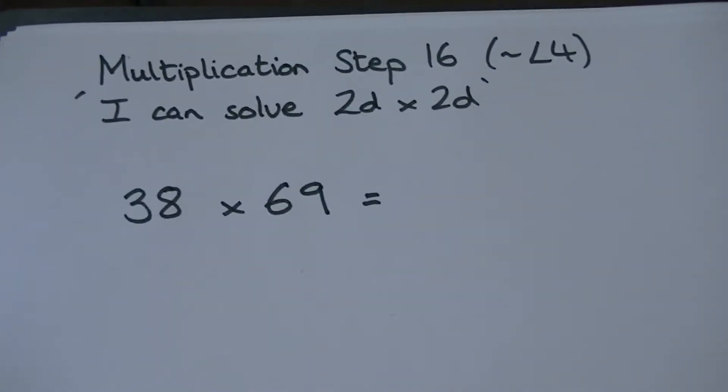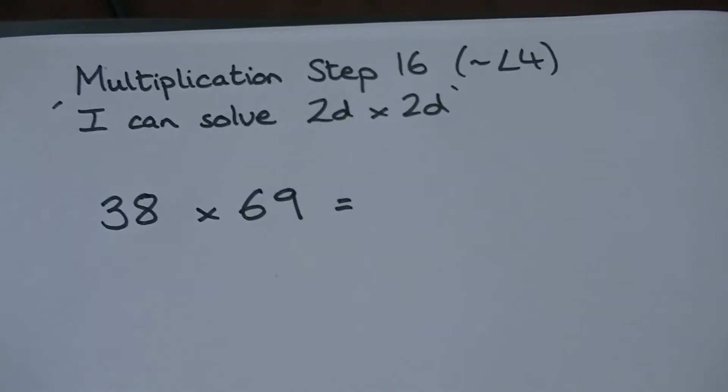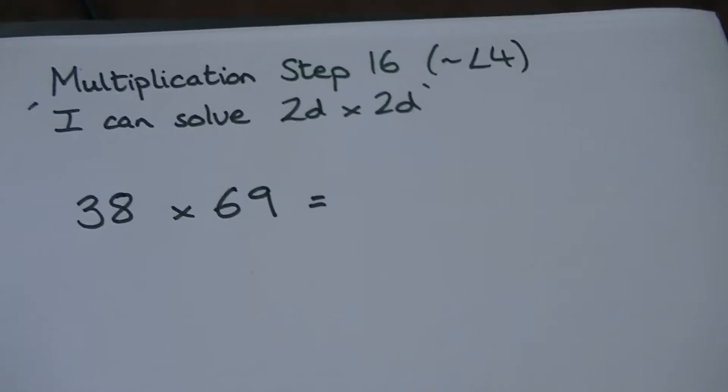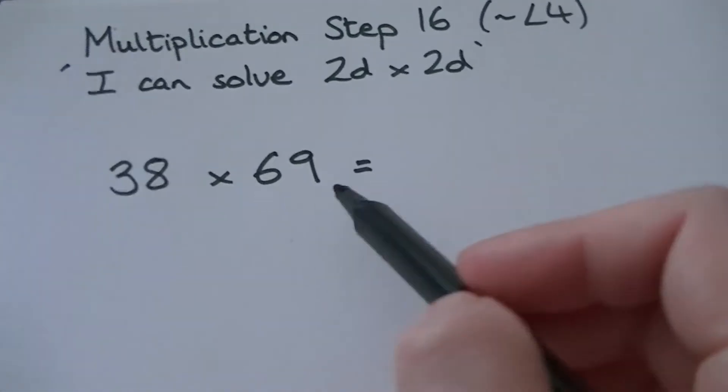In this video we're going to look at multiplication step 16. I can solve 2D times 2D. I can multiply any two-digit number by another two-digit number, and in this example we're going to use 38 times 69.